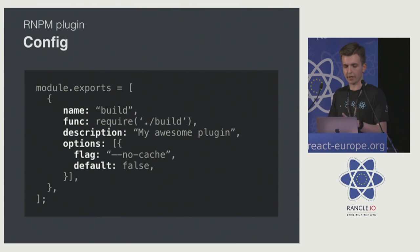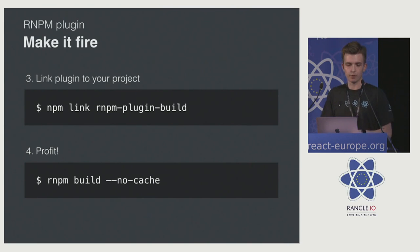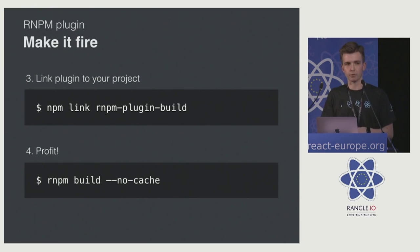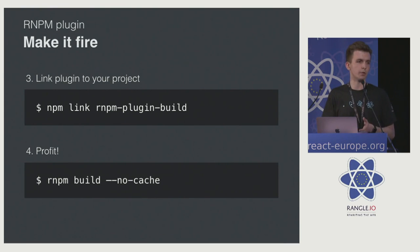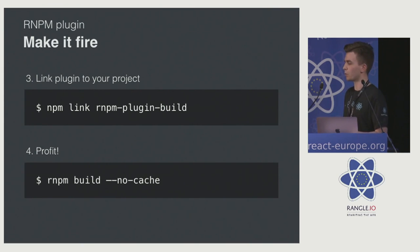There are a couple of other options available: you can validate them and set default values. Once that's done, you can just npm link or npm install the RMPM plugin into your project. The important thing is it has to be present in node_modules for RMPM to recognize it. Once that's done, you can just call 'rmpm build --no-cache' and that's going to work.